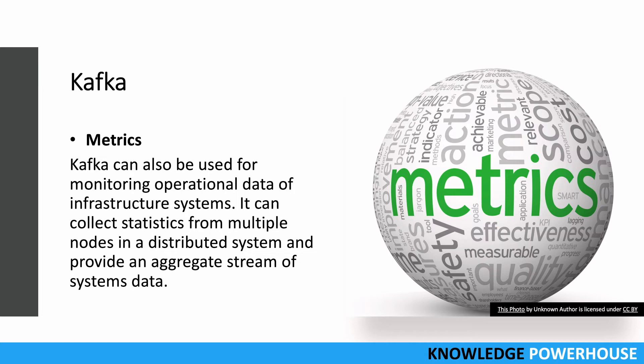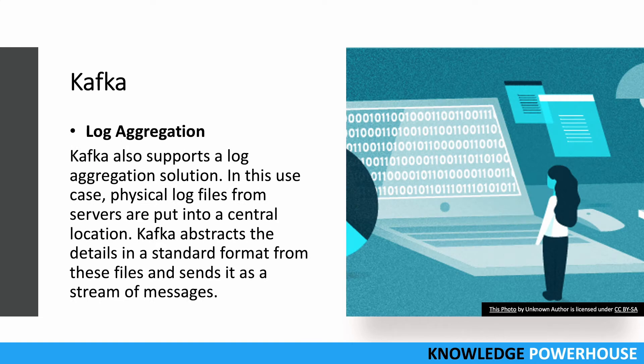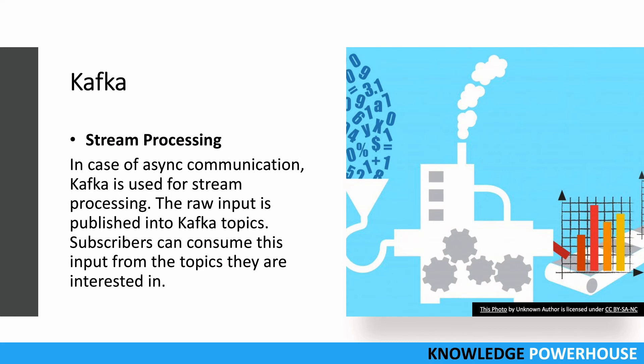Log aggregation is also a great use case for Kafka. In systems like telecom, there are many devices generating logs. Kafka can aggregate all these logs — it can get those physical log files from servers, bring them into a Kafka stream, and from there downstream systems can access them. Kafka abstracts the details into a standard format and sends it as a stream of messages to downstream consumers. Log aggregation is a very good use case for Kafka.